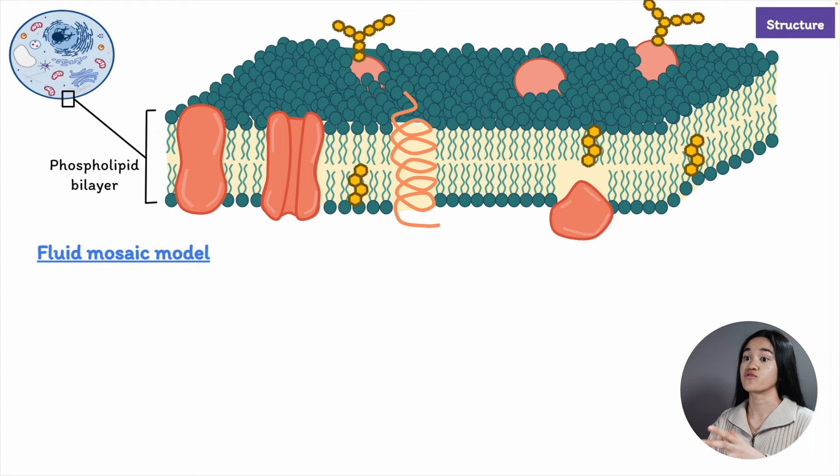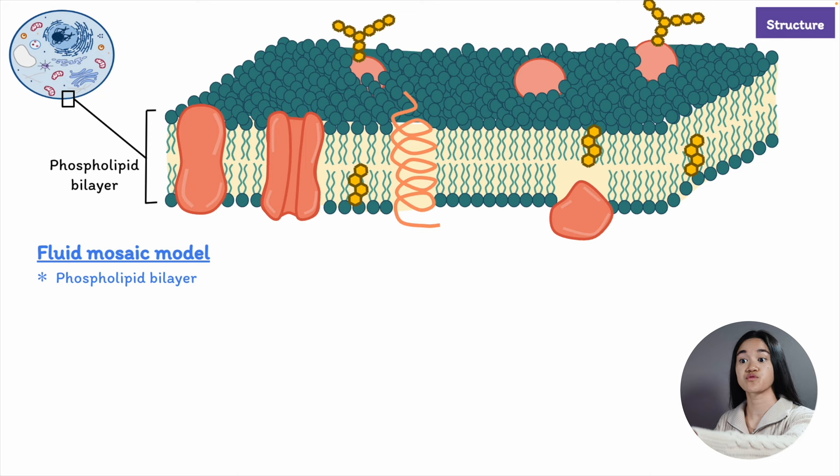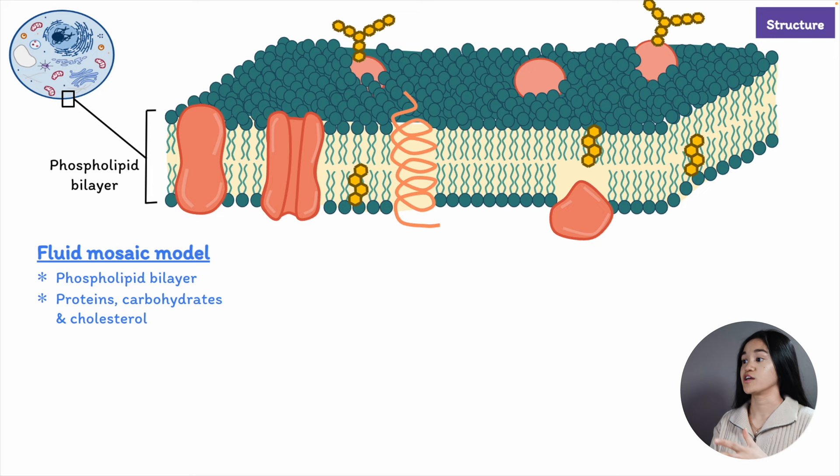You may have heard of the fluid mosaic model, which describes the arrangement or structure of the plasma membrane. This model describes the structure of membranes as a mosaic of components consisting of two layers of phospholipid molecules with other molecules including proteins, carbohydrates, and cholesterol. These components are able to flow and change position while maintaining the basic structure of the membrane.